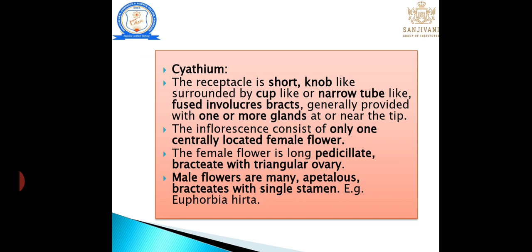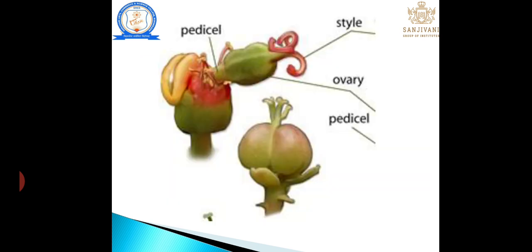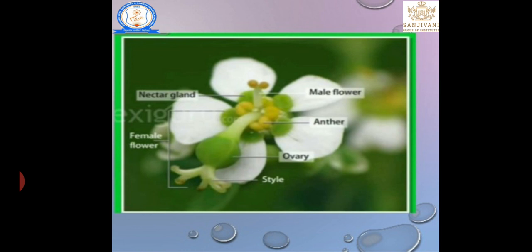Cyathium consists of a centrally located female flower and surrounding male flowers — only unisexual flowers, male and female, are produced separately. The female flower is pedicellate with a triangular ovary; male flowers are apetalous, bracteate, with a single stamen. A small gland is present before female flower production; that gland produces a cup-like structure — an ovary with triangular ovary, style, and pedicel. Male flowers are apetalous — there is an absence of petals.